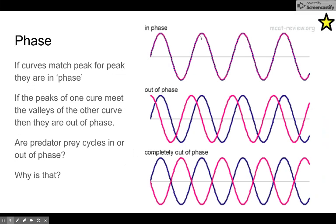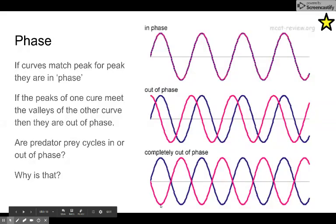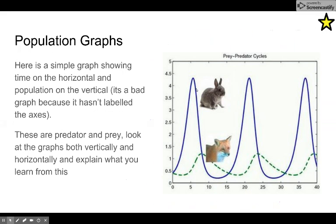Two populations that are totally synchronized — there are two plots that land on top of each other — are completely what's called in phase. Out of phase means one of them peaks before the other one peaks. Completely out of phase means one wave is at its crest while the other is at the trough — they're completely backwards from each other. So our predator-prey curves: are these things in phase, out of phase, or just slightly out of phase with each other?